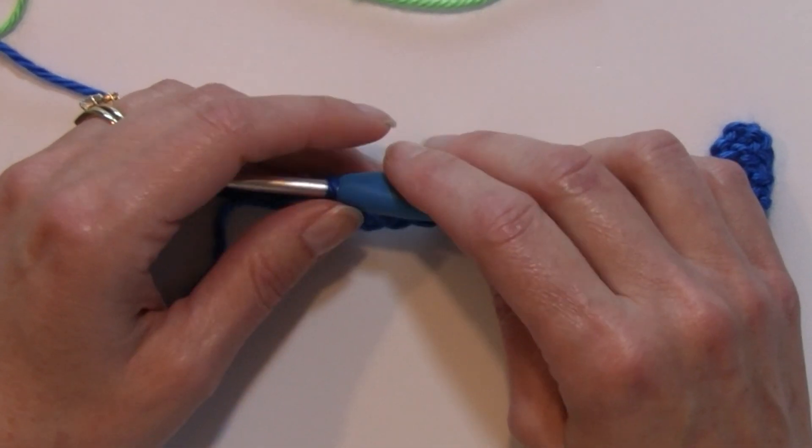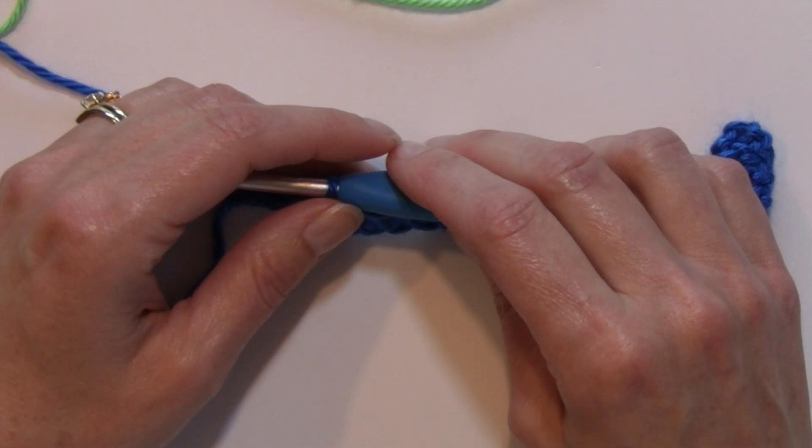I'm going to be showing you today how to make the popcorn stitch as well as how to change colors if you're making that stitch in a different color from the rest of your row.